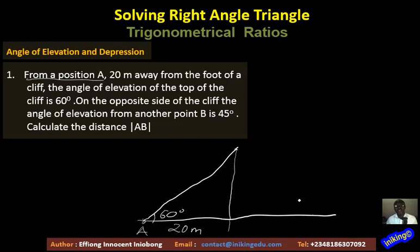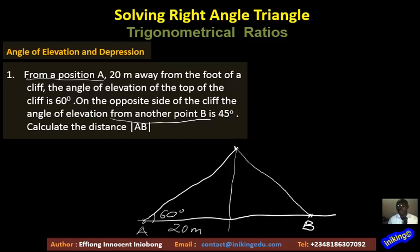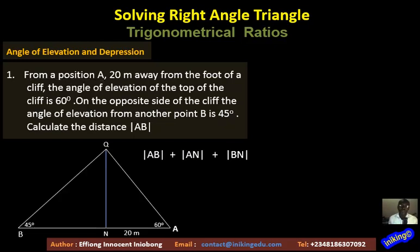On the opposite side of the cliff, from another point B, the angle of elevation is 45 degrees. Here we have our A on the right-hand side, our B on the left-hand side. The angle of elevation from A is 60 degrees, which is 20 meters from the foot of the cliff — our cliff there is in blue — and from the opposite side, the angle of elevation is 45 degrees from B.